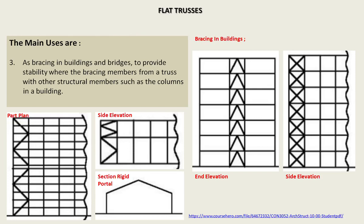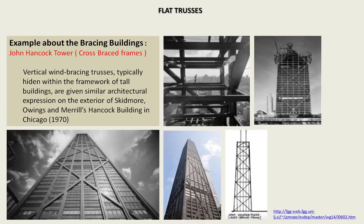Another main use of trusses is as bracing in buildings and bridges, to provide stability where the bracing members form a truss with other structural members such as columns in a building. An example of bracing in buildings is the John Hancock Tower in Chicago. Vertical wind-bracing trusses, typically hidden within the framework of tall buildings, are given similar architectural expression on the exterior of Skidmore, Owings and Merrill's Hancock Building in Chicago.